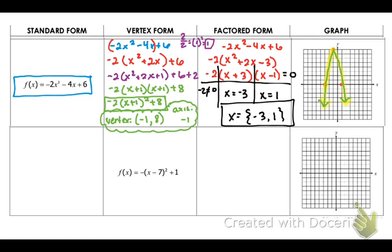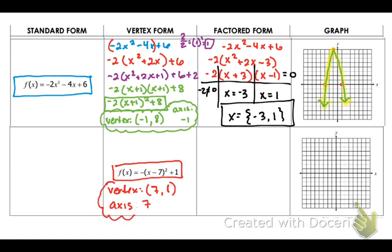I'm going to do the second one with you — I'm actually going to do three complete ones, and then you're going to move on to the other three. Notice how we started off with standard, went to vertex, then factored, then used factored and vertex to get the graph. Now this time I actually have vertex form as the starting point — this is already my answer. However, I'm still missing the vertex, which is going to be positive 7 and positive 1, and the axis is going to be 7.